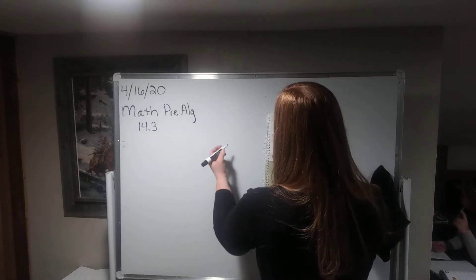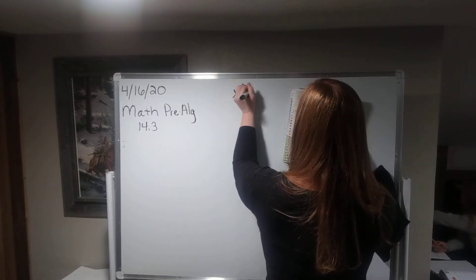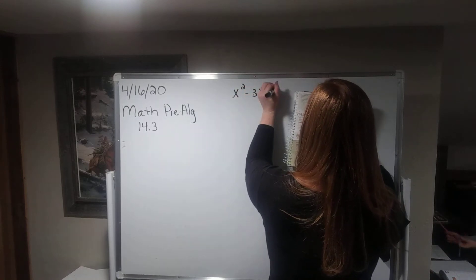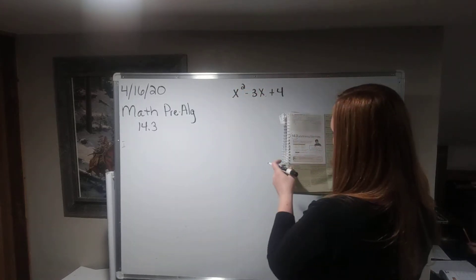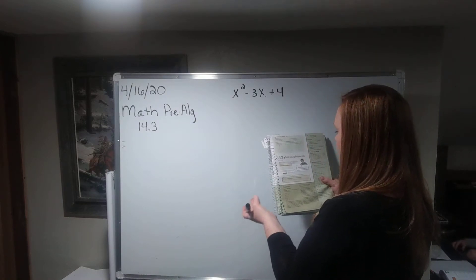Okay, so let's just go ahead and get to example 1, and it is x squared minus 3x plus 4, and it says find the opposite of the polynomial.